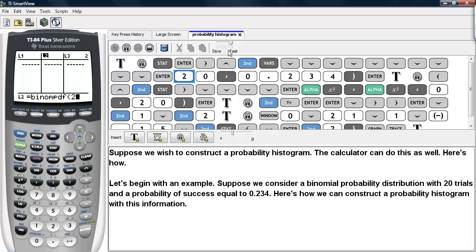We type in the number of trials, in this case 20, then a comma, and then the probability of success, 0.234. And this will generate a list of these binomial probabilities.